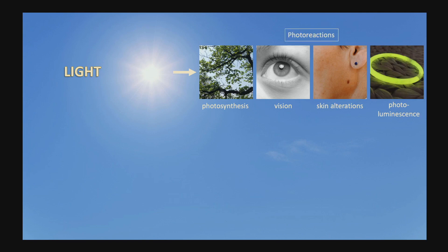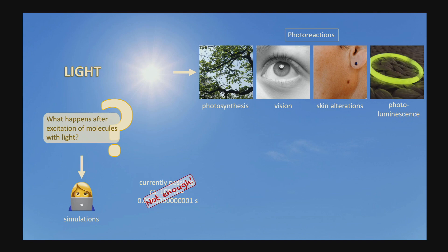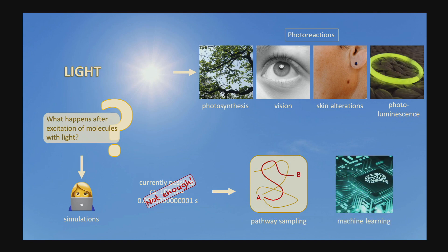In order to learn more about these so-called photoreactions, we perform computer simulations. We want to figure out how molecules behave after being excited by light. Currently, such simulations can be computationally very demanding so that it is often only possible to simulate a few hundred femtoseconds. In many cases, however, this is not enough. Therefore, we are working on speeding up the simulations of light-induced chemical reactions by employing efficient sampling methods that help to find the pathway the chemical reaction at hand follows and by incorporating machine learning.